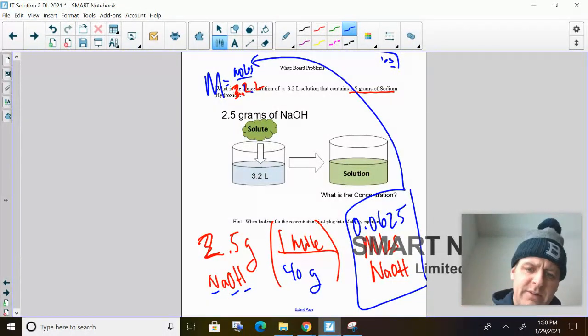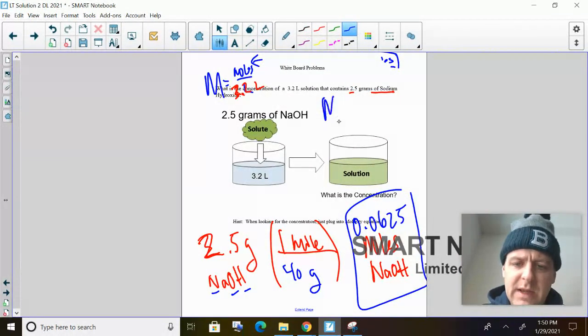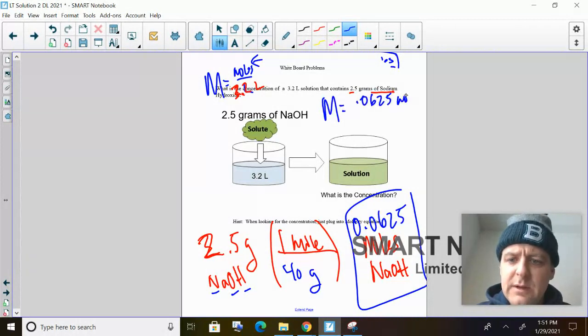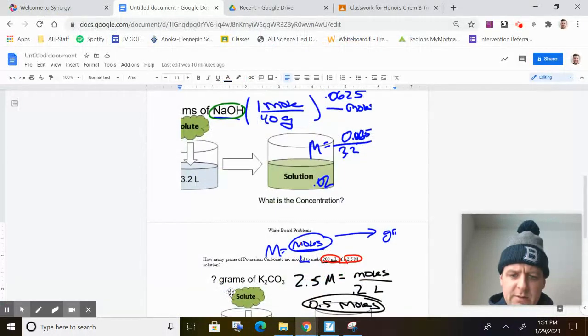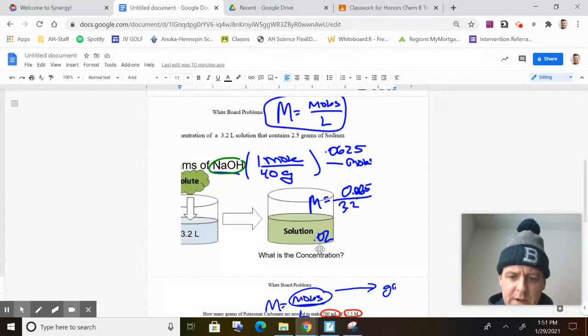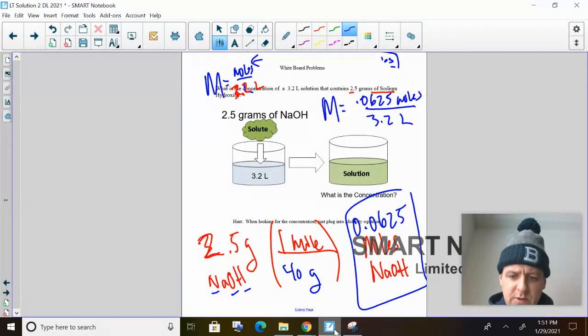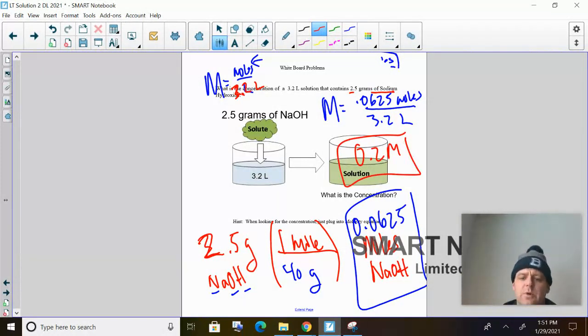So now I get to solve for molarity. So my final answer before I plug it in is going to be big M is equal to 0.0625 moles over 3.2 liters. My answer is 0.02 if you do that in your calculator. So then the answer is 0.02 big M molar.